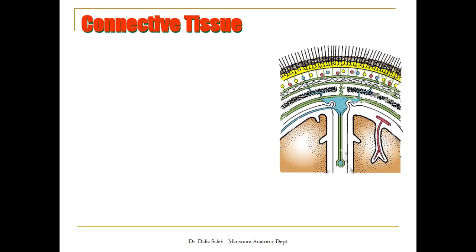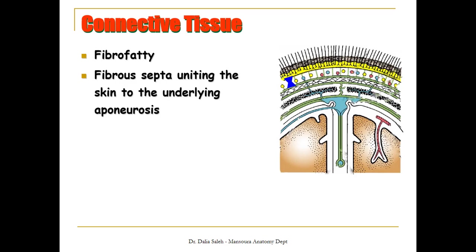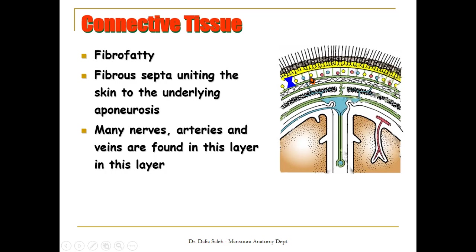Next we have the connective tissue layer, beneath the skin. It's a fibrous fatty layer characterized by the following: it contains fibrous trabeculae uniting the skin layer above it to the underlying aponeurotic layer. That's why these three layers move as one, because of these fibrous trabeculae. Also, it contains many nerves, many arteries, and veins found here in this subcutaneous tissue.